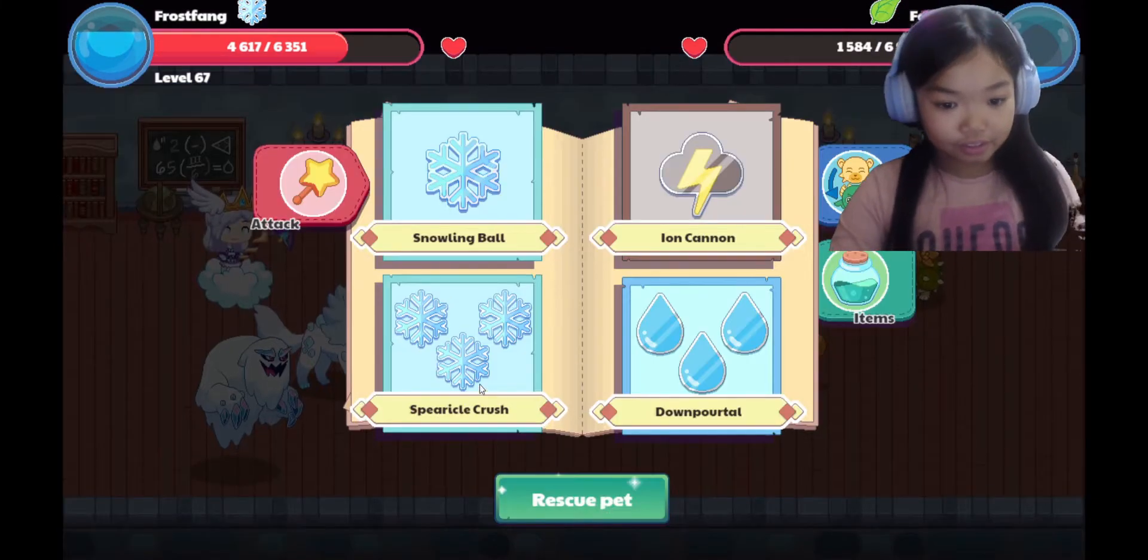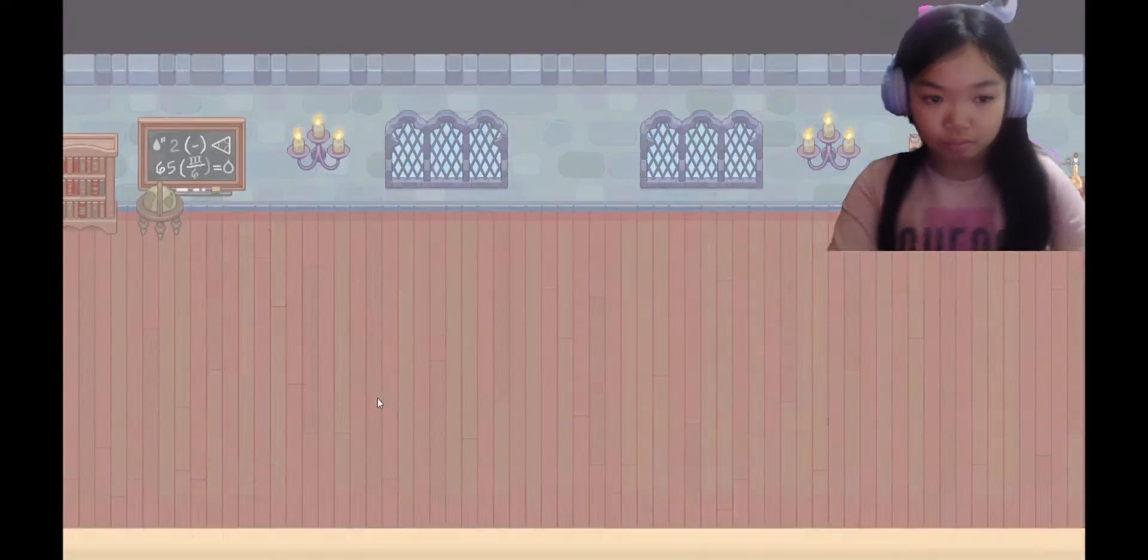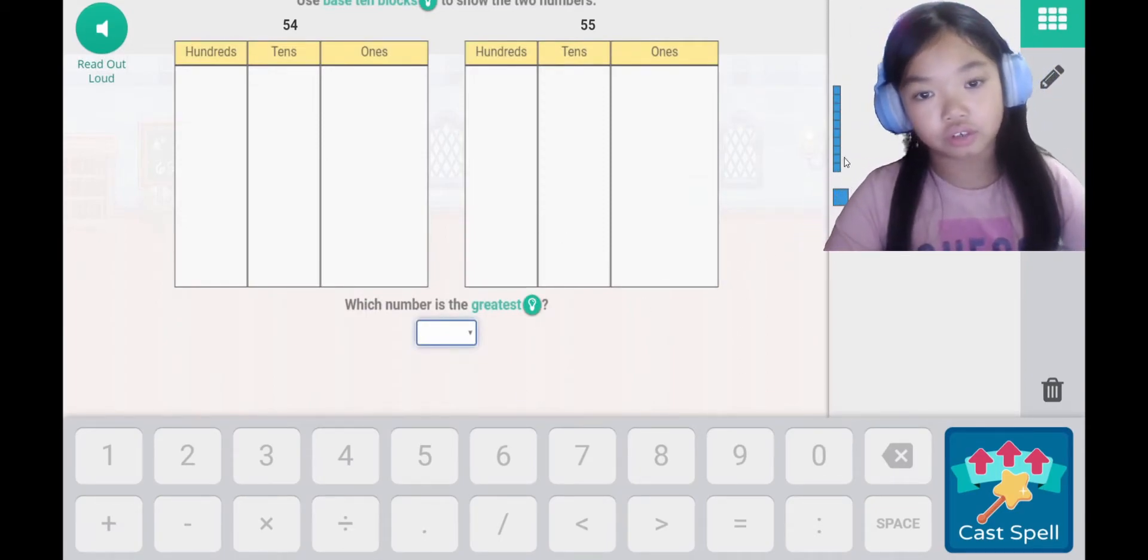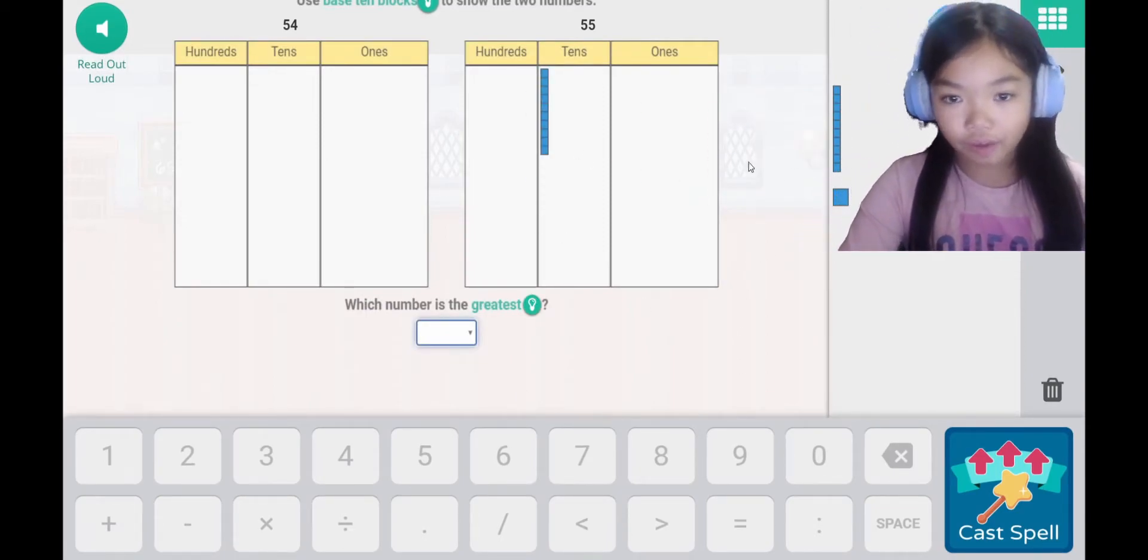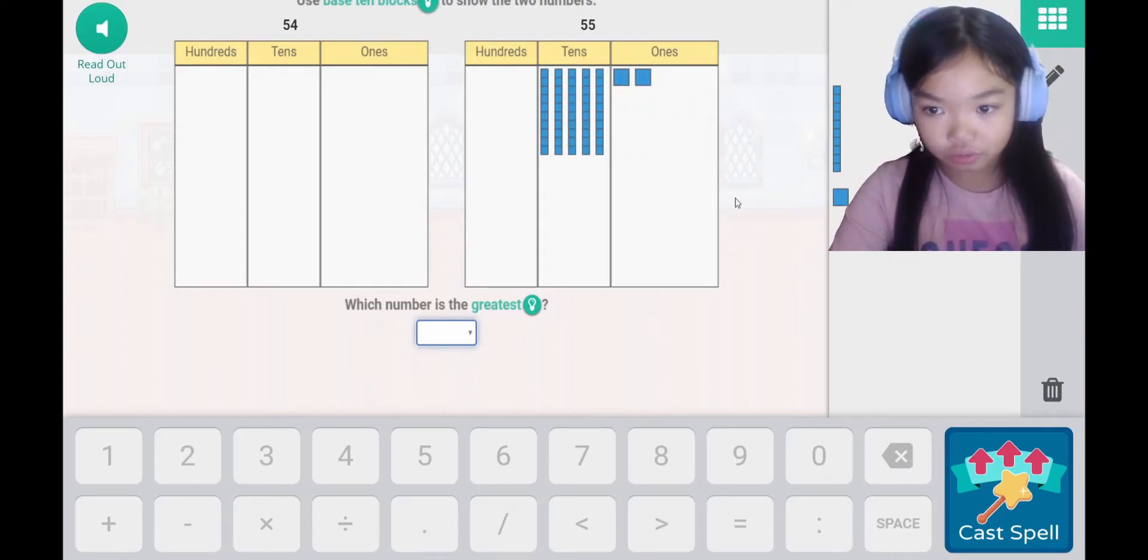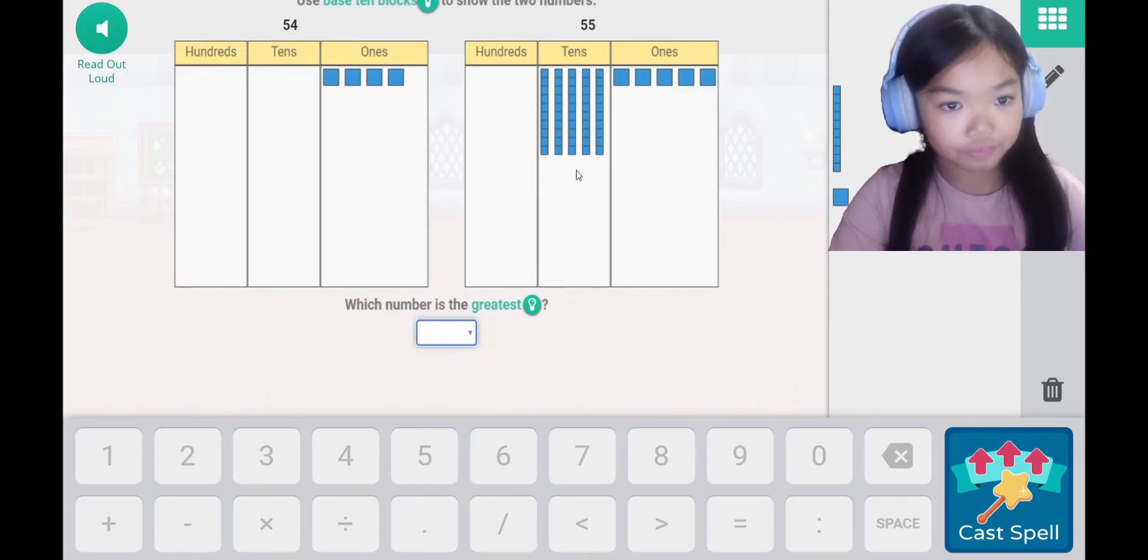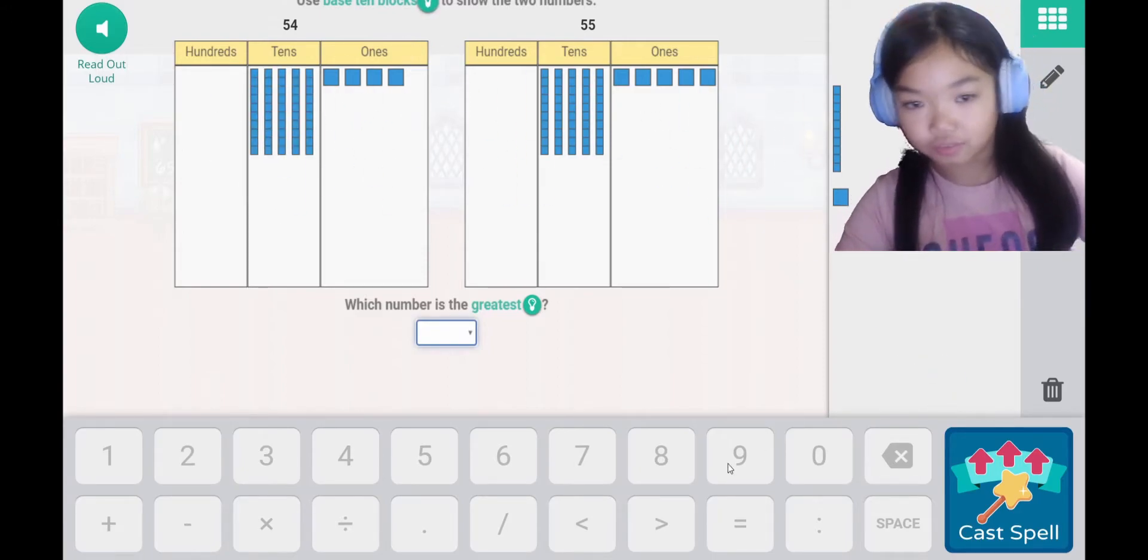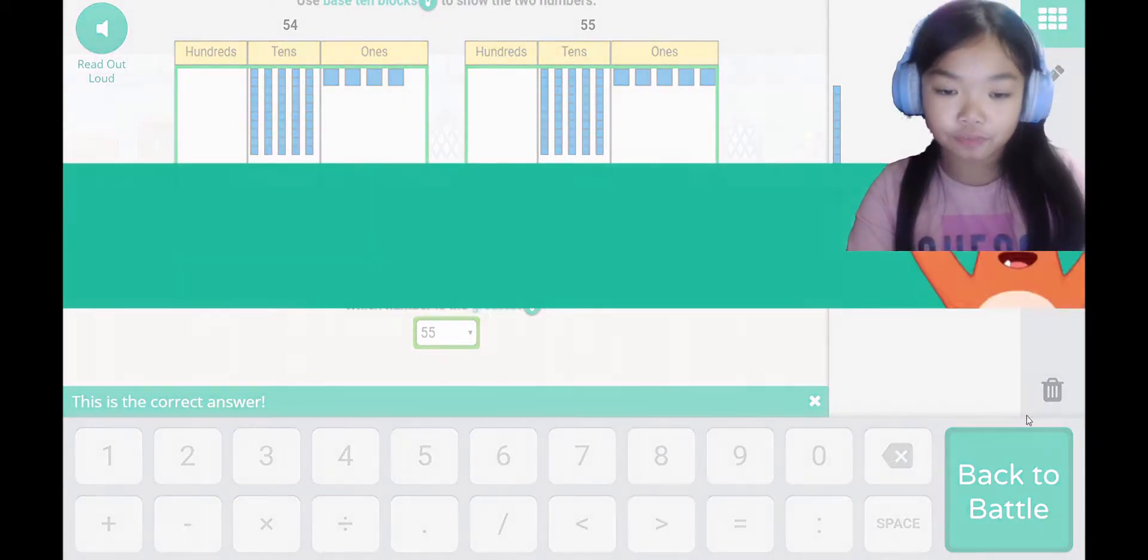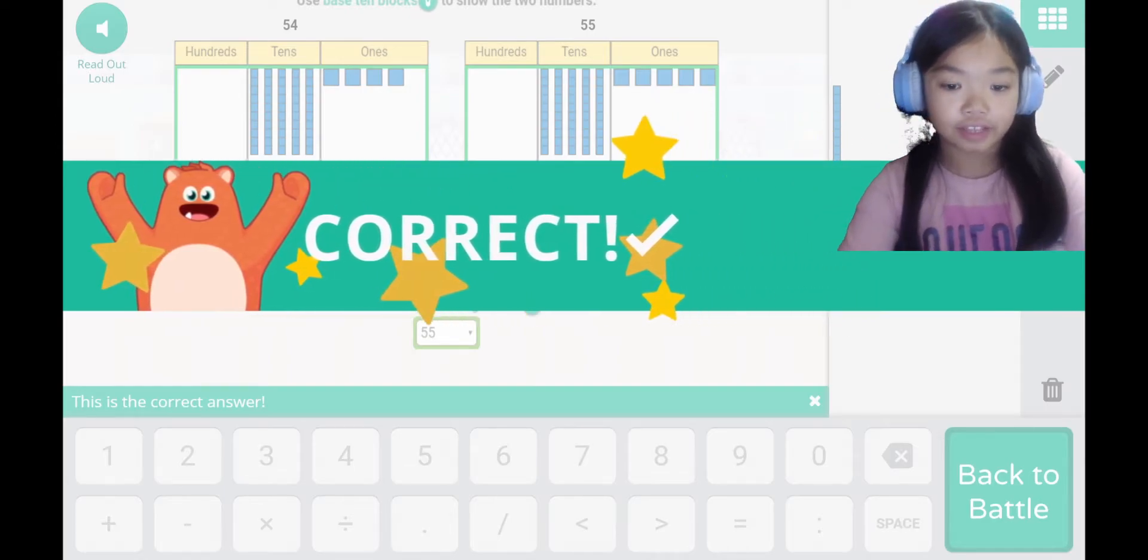Let's use this little power thingy. Use base 10 blocks to show the two numbers, 55 and 54. 1, 2, 3, 4, 5 tens and 5 blocks. 1, 2, 3, 4, 5. And 1, 2, 3, 4, 5. Take one away from here because it's 54. Which number is the greatest? 55, because 4 is 1 less than 5.